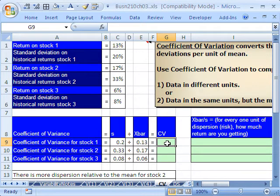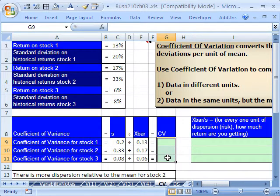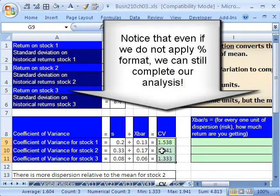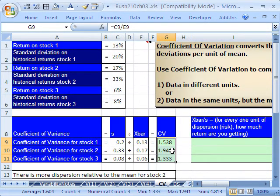This will tell us for every one unit of X bar what is the standard deviation. I'm going to highlight all these cells. And I'm going to say equals standard deviation divided by our X bar. Control, Enter. Those are relative cell references. So the big one here has the most variability, the most standard deviation per one unit of X bar. So that is one way to do it.